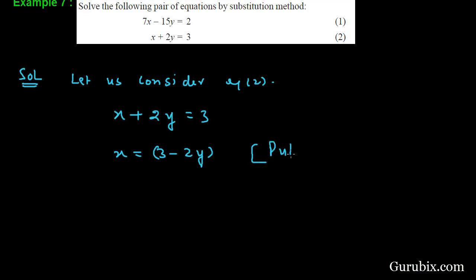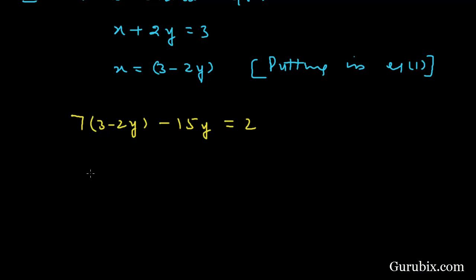We shall write here putting in equation number 1. The equation 1 is 7x, then the value of x is 3 - 2y, and here is -15y = 2. If we further solve this equation, then we have 21 - 14y - 15y = 2. This means -29y = -19.